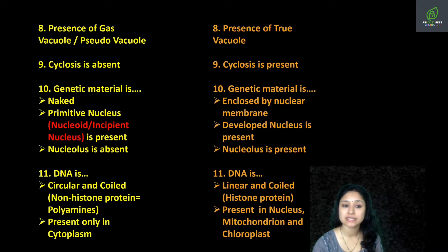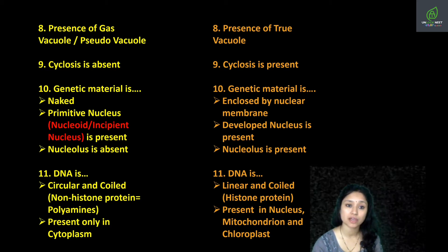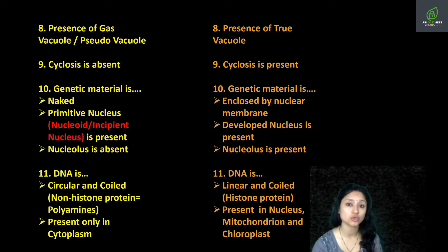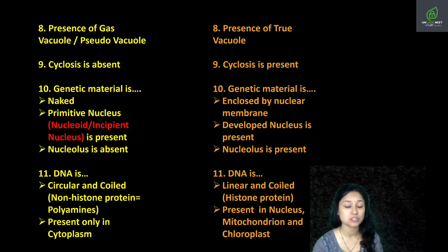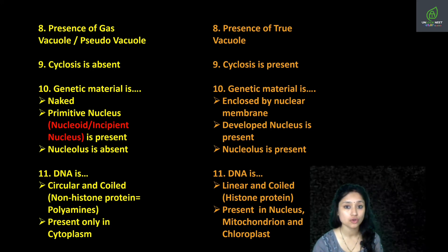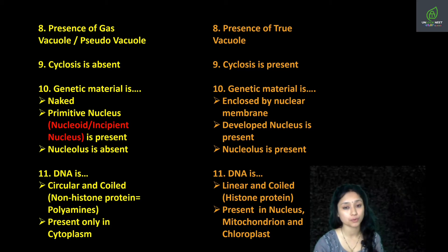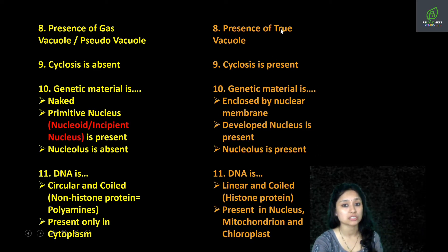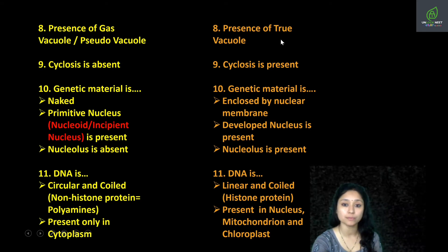In prokaryotic cells, the vacuoles present are gas vacuoles. These vacuoles help the bacteria in floating and also provide buoyancy to the organism. They are also called pseudo-vacuoles, because the membrane of the vacuole is not a true membrane — the lipid bilayer is absent and they are composed only of protein. True vacuoles are present in eukaryotic cells, because their membrane is made of a lipid bilayer along with protein.